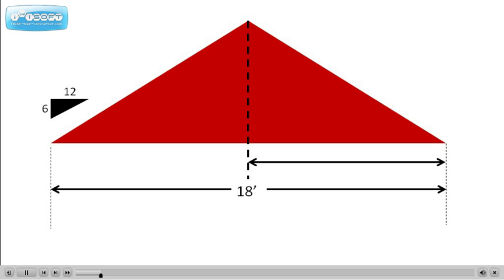Let's look at an example where the span is 18 feet and the roof slope is 6 and 12. If a roof slope is 6 and 12, this indicates that the roof will rise 6 inches for each 12 inches of horizontal measurement. As you'll see in this illustration,